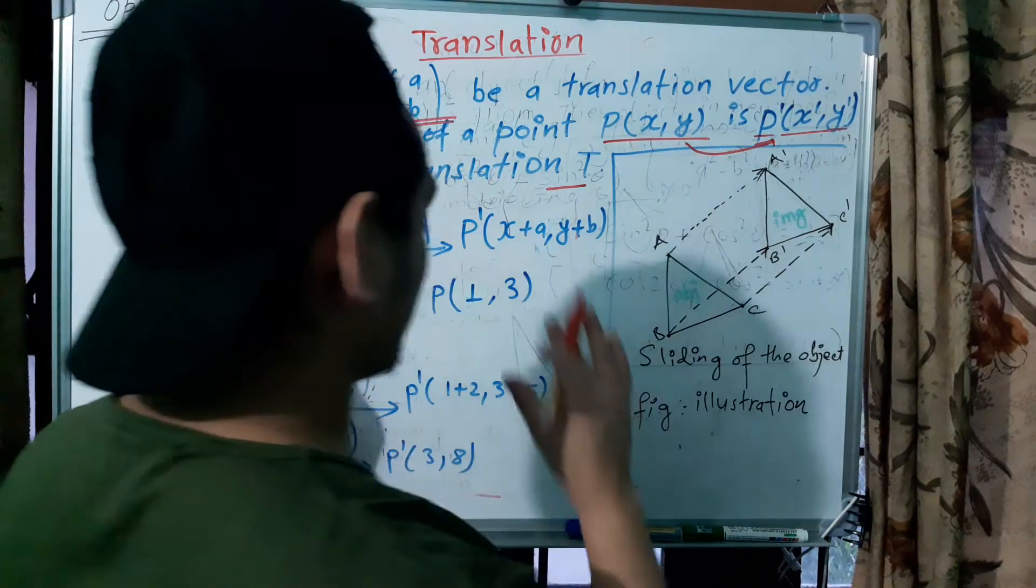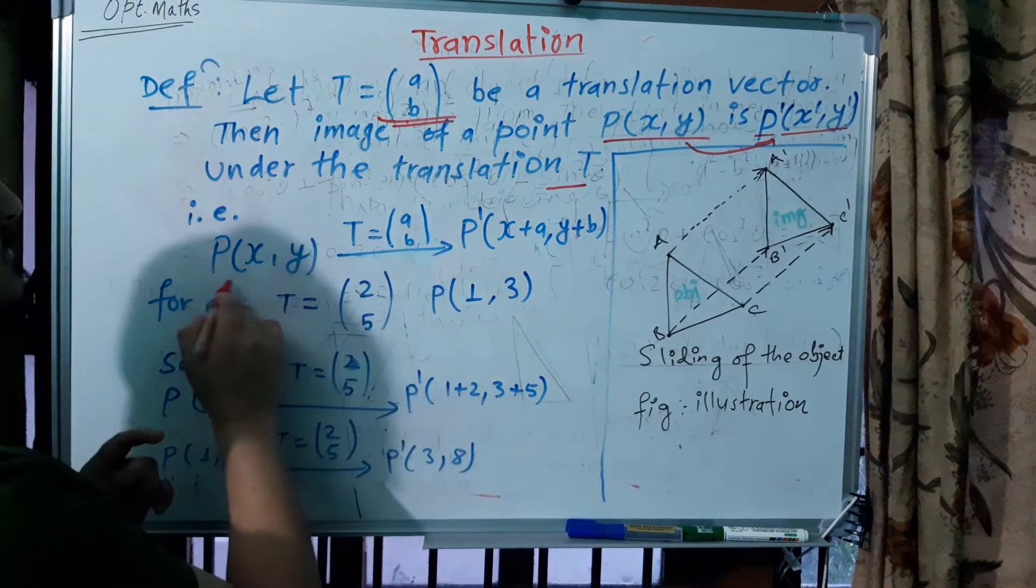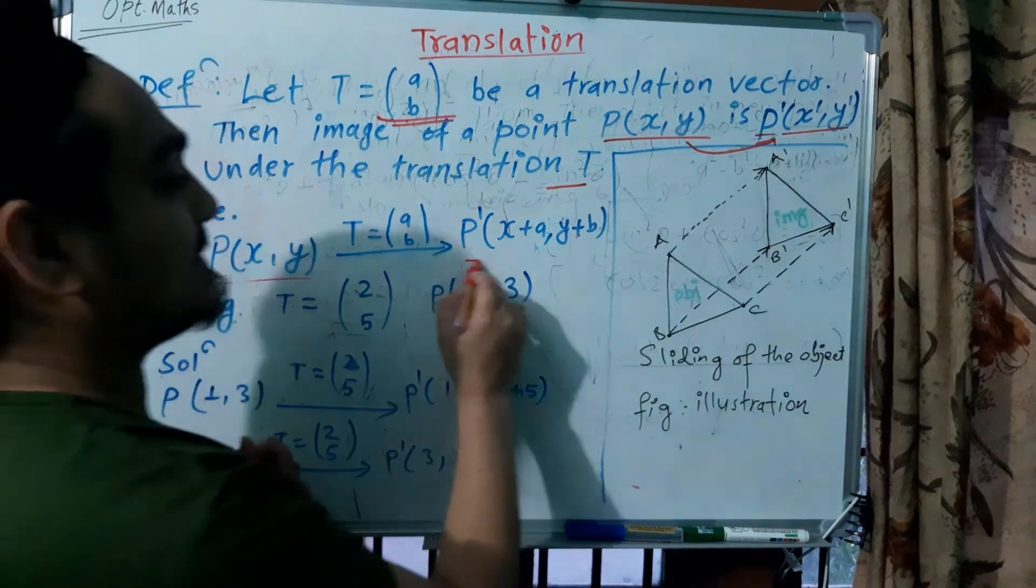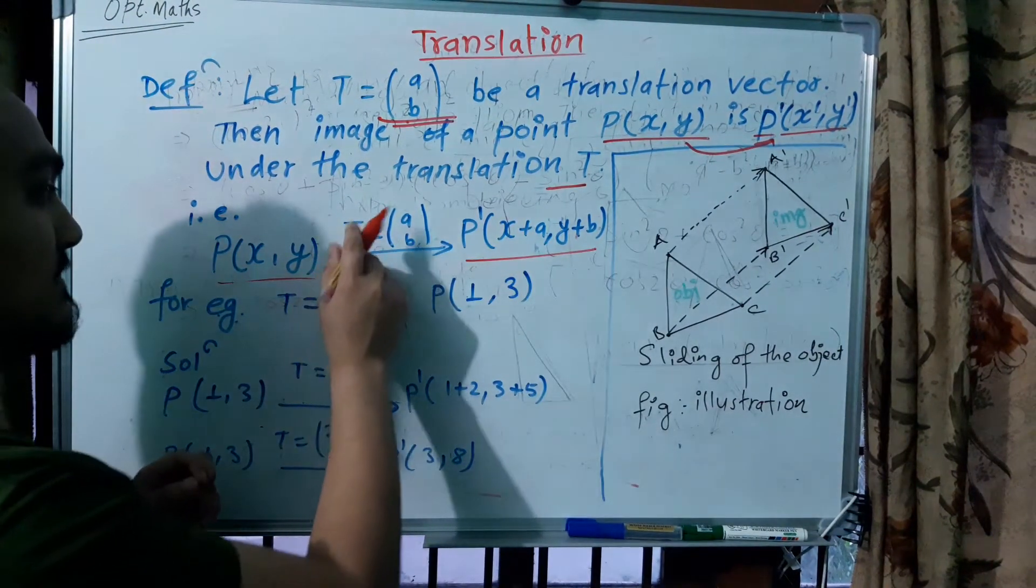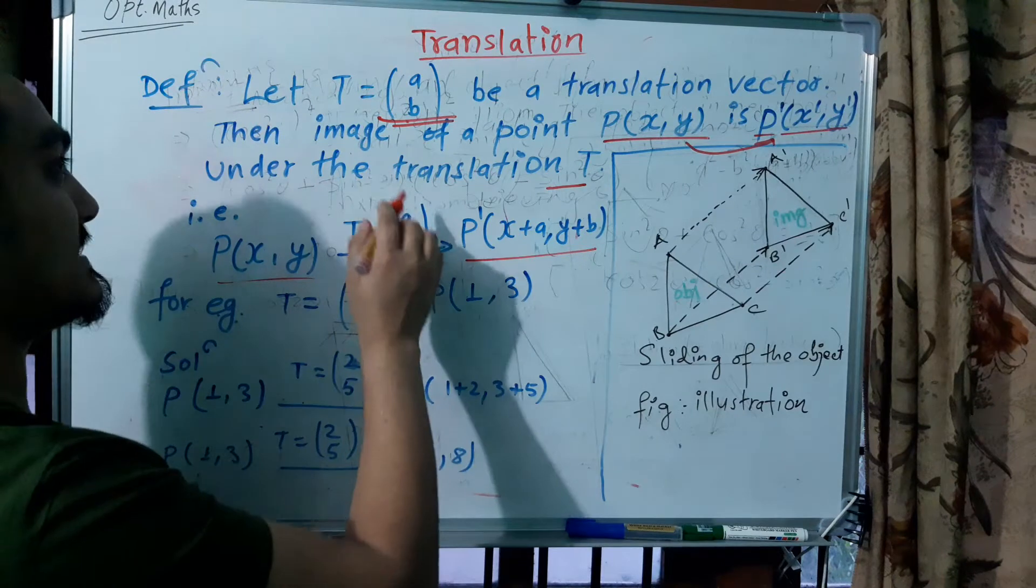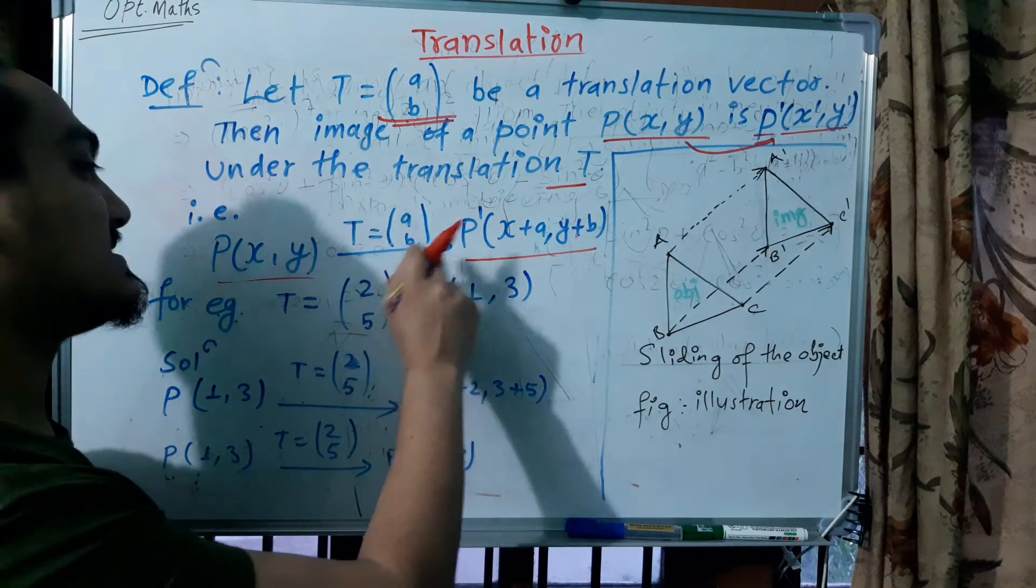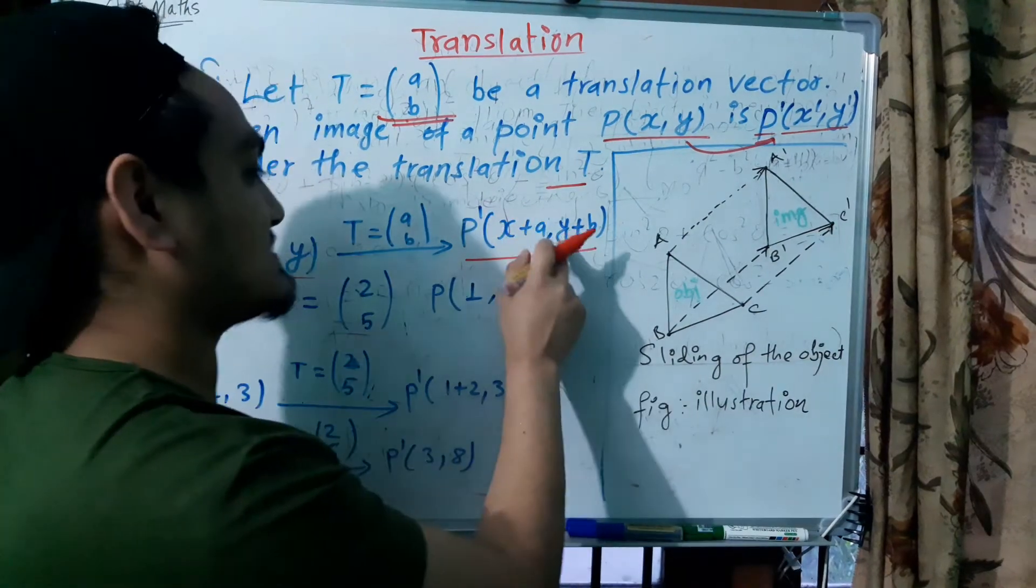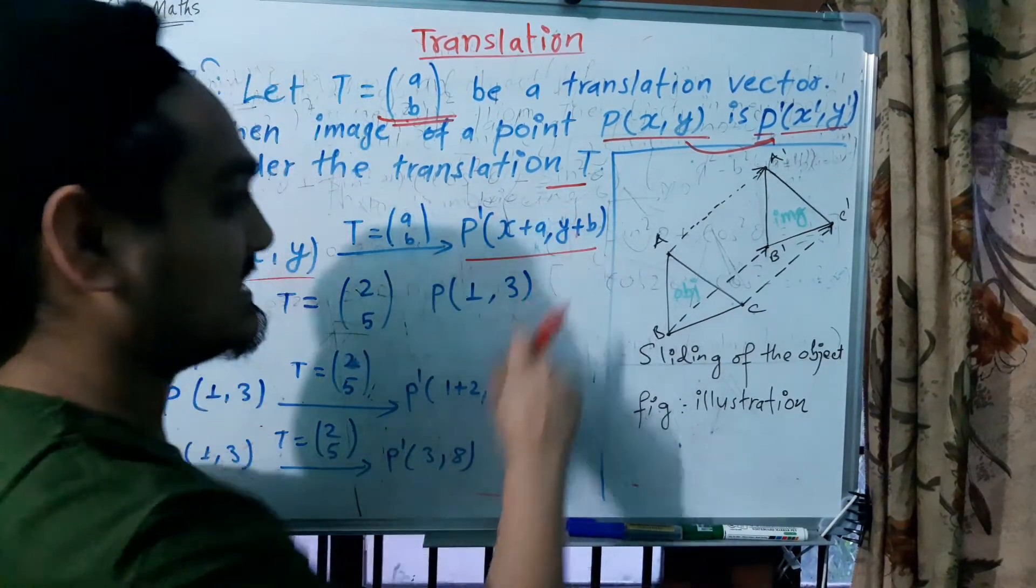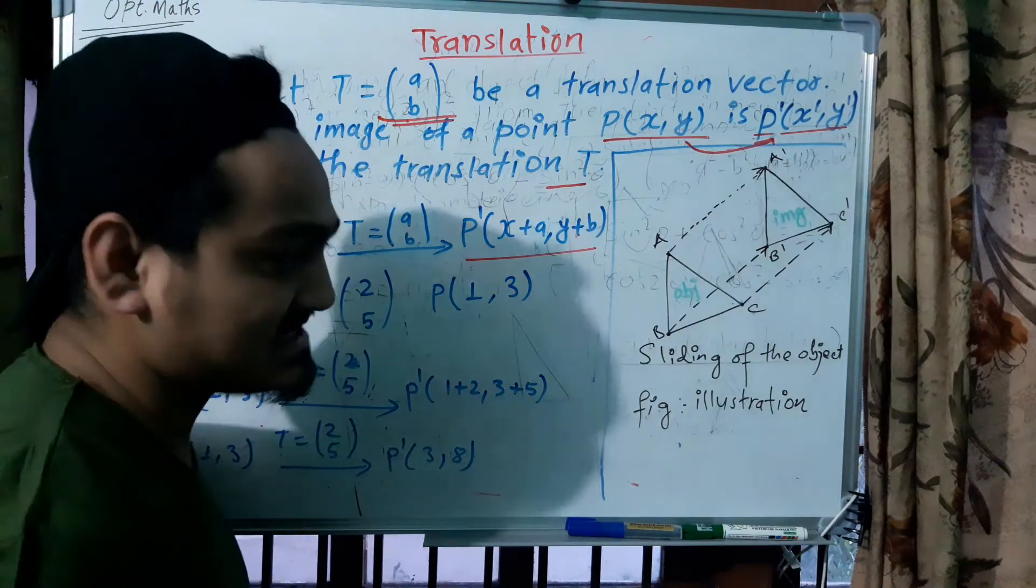P'(x',y') - if you have a mathematical version, then translation vector T equals (a,b), the image is P'(x+a, y+b).